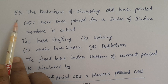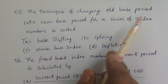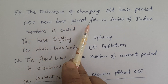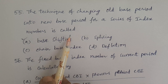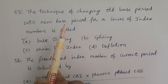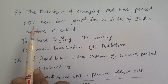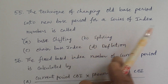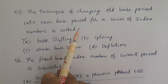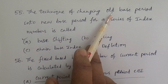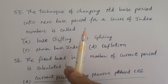Question number 55. The technique of changing an old base period into a new base period for a series of index numbers is called — what is this kind of technique going to be called?